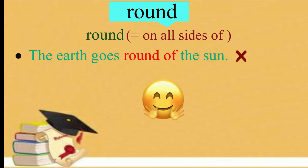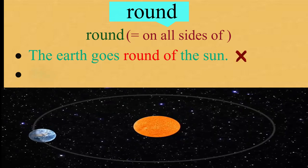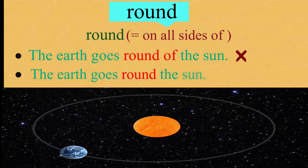This is incorrect. Because the word of is already included in the meaning of the word round. So, repeat the correct sentence after me: The earth goes round the sun.